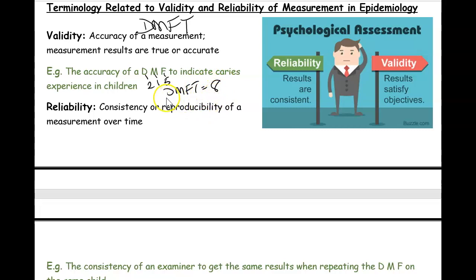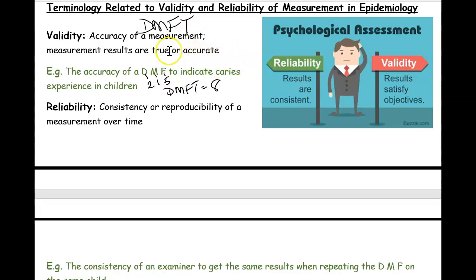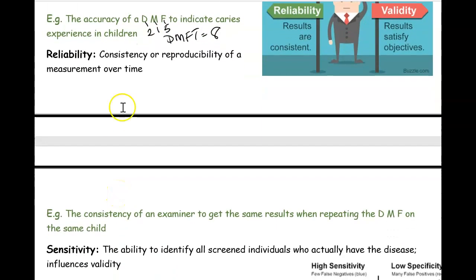If I do a DMFT score on my entire class and I always get the most accurate results, then my study has high validity — meaning the DMFT index I'm using is accurate. Reliability means that if I do this study semester after semester and always get the same results, that's reliability.